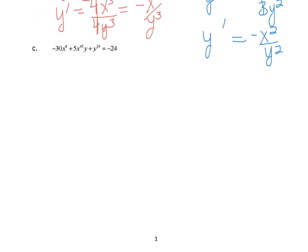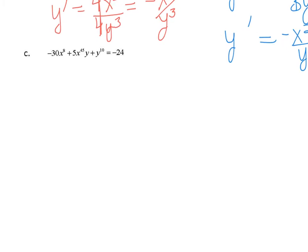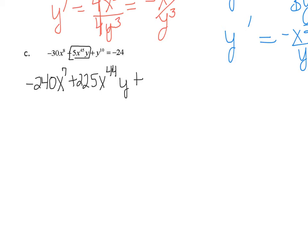Example C is going to be a little more complicated. Let's start taking the derivative. We get negative 240x to the 7th — that's the derivative, same as normal. The next term is actually a product, so we need the product rule. We take the derivative of the first part — 5x to the 45th power — giving 225x to the 44th power. Multiply that by the second, then add the derivative of the second, which is y prime, times the first: 5y prime x to the 45th.